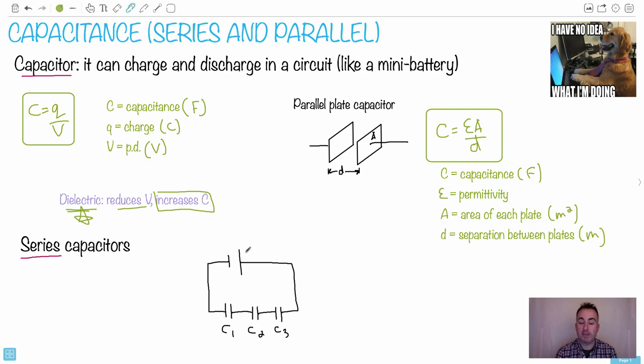We've got series capacitors, which means if we have a battery and put in three capacitors in series, you might think it's like resistance where you just add them all up. But capacitors work in the opposite way that you think. Luckily you have this equation: 1 over C in series equals 1 over C1 plus 1 over C2 plus 1 over C3. They work like resistors in parallel. This equation is given on your data booklet.